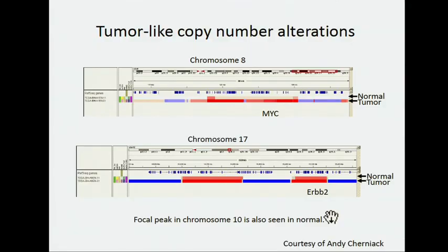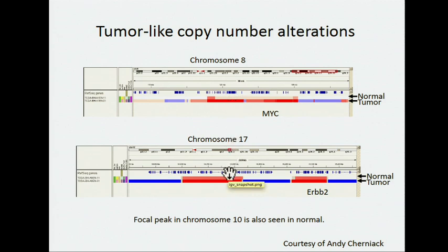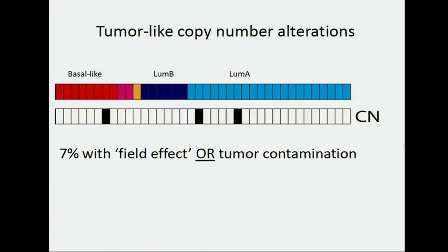This slide is courtesy of Andy Cherniak, and it shows how we're using the SNP array data to find copy number alterations. Using the blood normal as a comparison, Andy identified the copy number alterations in tumor. You can see there's a MYC amplification present in this particular tumor. Lined up right above that is the normal adjacent, and you can see there are also focal areas of MYC amplification in that normal tissue. This would be what we consider a field effect — or it could be evidence of tumor cells, and it's difficult to distinguish that just from looking at this data.